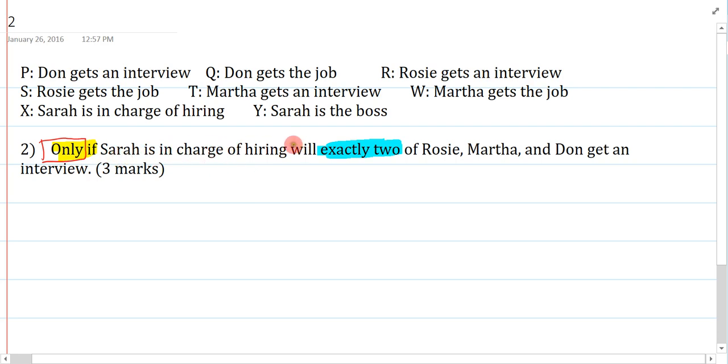So if Sarah is in charge of hiring, that's X. Exactly two of Rosie, Martha, and Don get an interview. So let's just write these letters out. Rosie gets an interview as R. Martha gets an interview as T. And Don gets an interview as Q. So I just need to say exactly two. Now typically, if only wasn't there, this would say if Sarah is in charge of hiring, then exactly two. But because the only is there, this will actually say, not this way, but will say exactly two, then X.